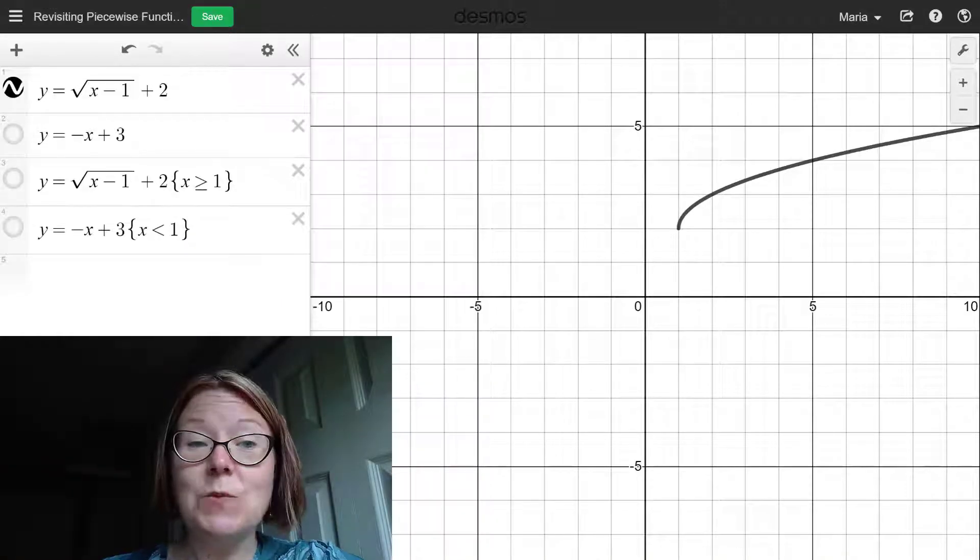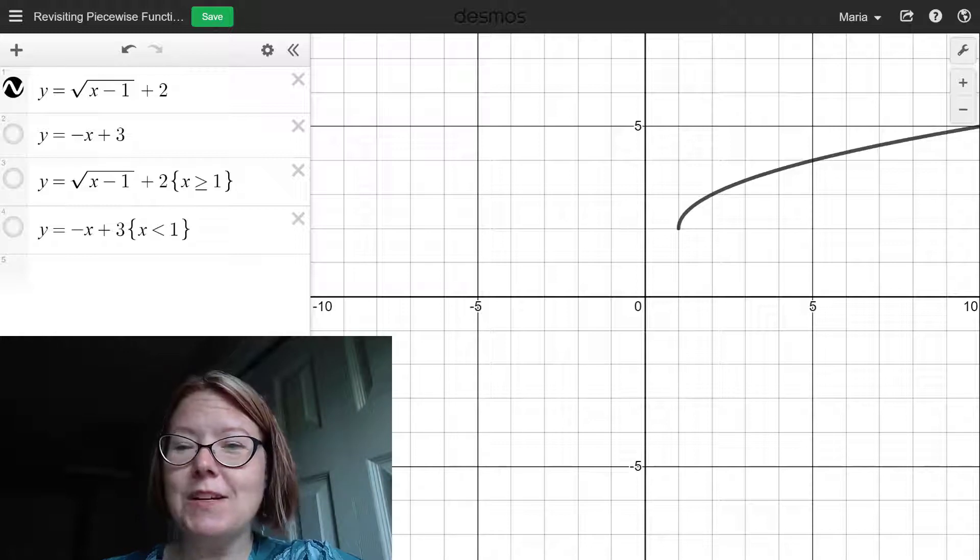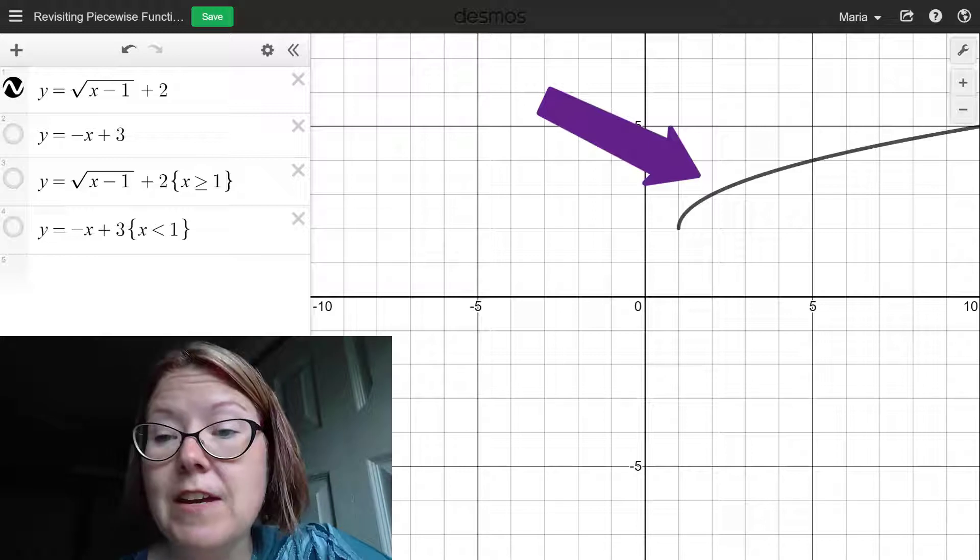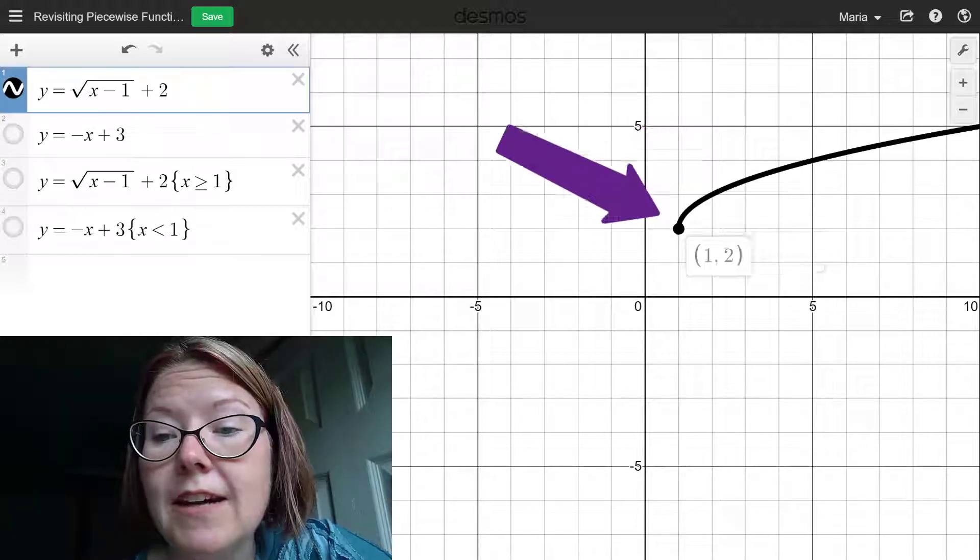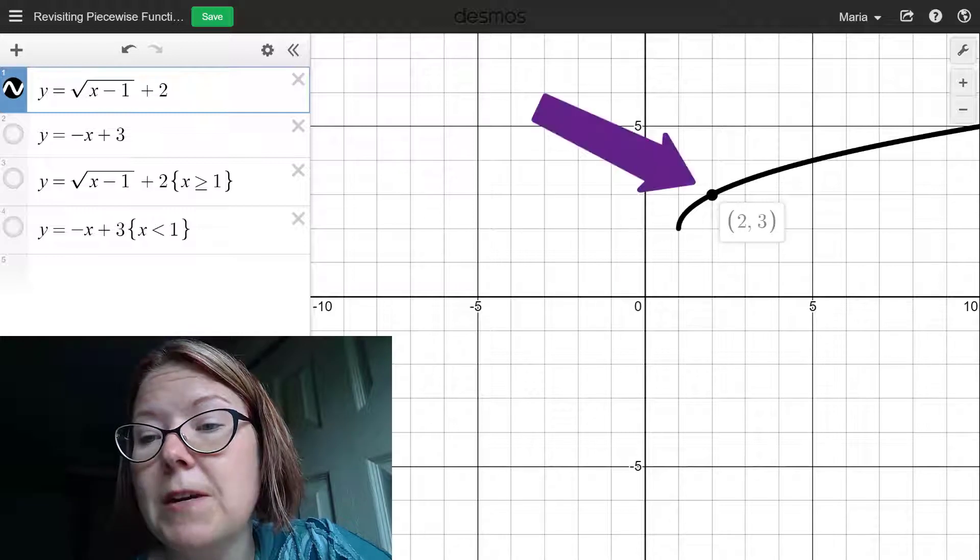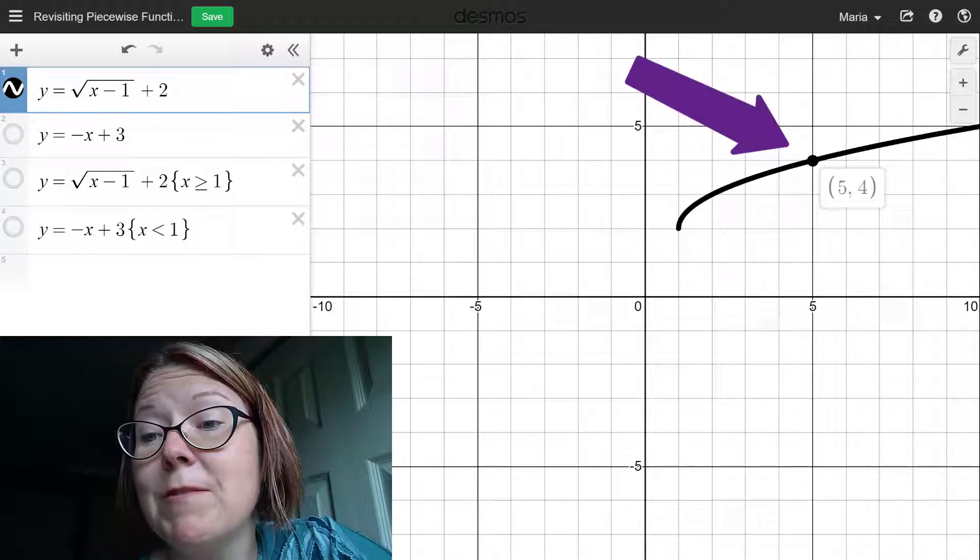The first function I graphed here is y equals the square root of (x - 1) and then plus 2 off to the side. This is a square root graph. It has an endpoint at (1, 2), and it passes through points like (2, 3) and (5, 4).